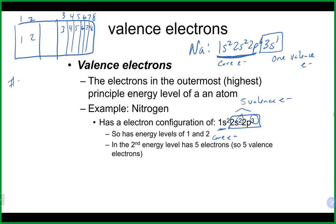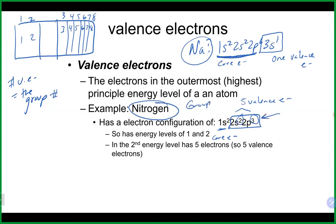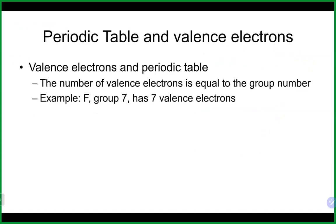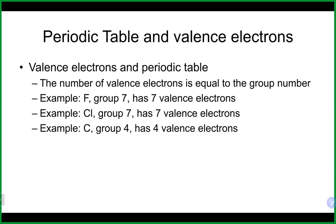The number of valence electrons equals the group number — that's a much easier way to figure it out. That's why sodium, which is in group one on the periodic table, has one valence electron, and nitrogen, which is group five, has five valence electrons. You can write the electron configuration or just look at the group number.